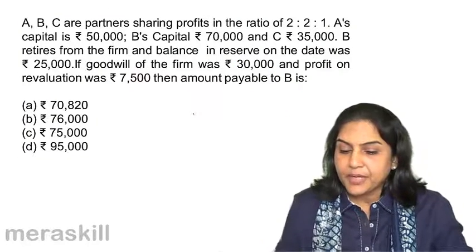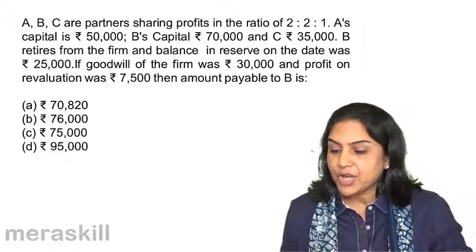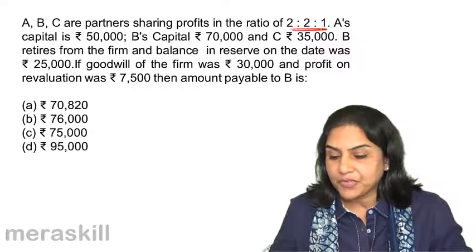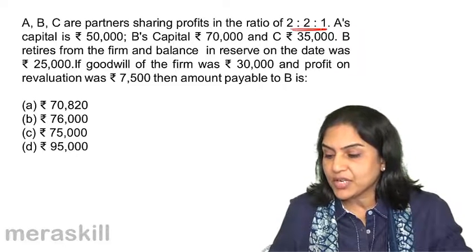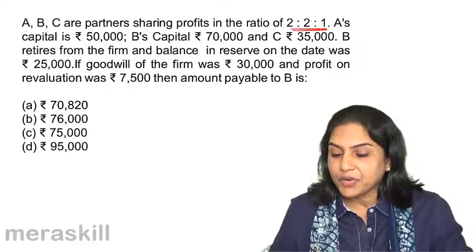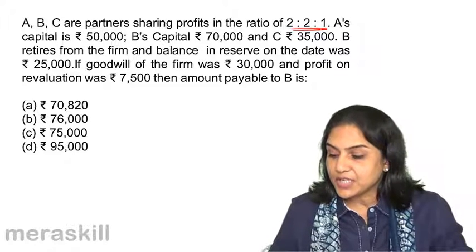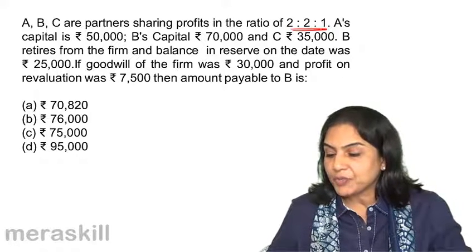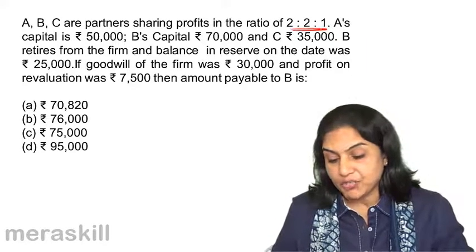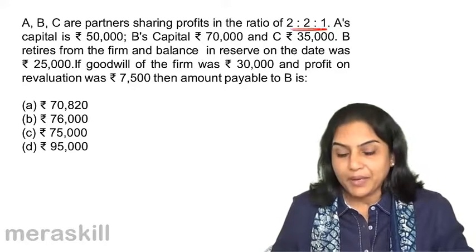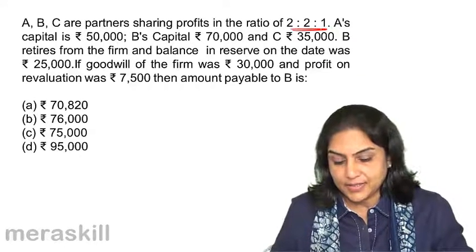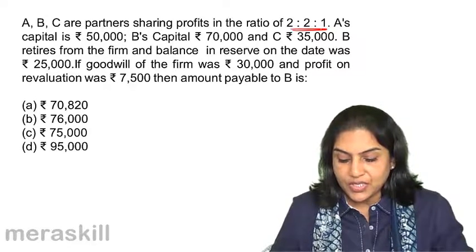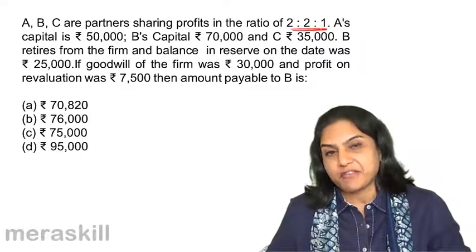Let us take a problem. A, B and C are partners sharing profits in the ratio 2:2:1. A's capital is 50,000, B's is 70,000 and C's is 35,000. B retires from the firm and the balance in the reserve on that date was Rs 25,000. If goodwill of the firm was Rs 30,000 and profit on revaluation was Rs 7,500, the amount payable to B is: A) 70,000, B) 76,000, C) 75,000, D) 95,000.